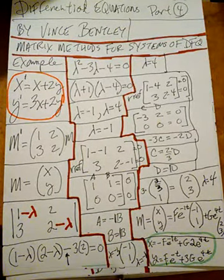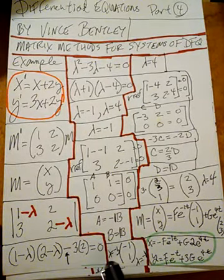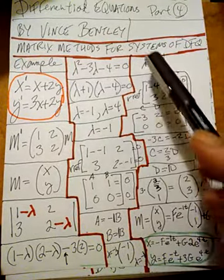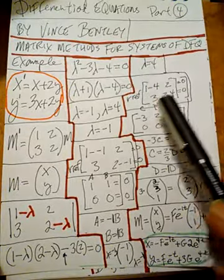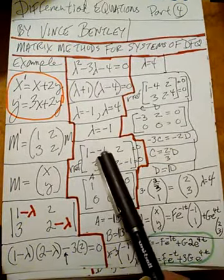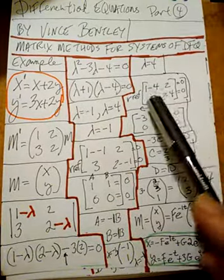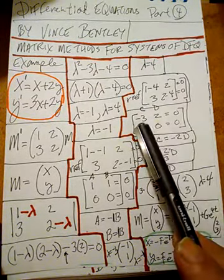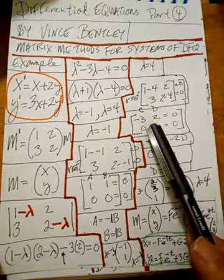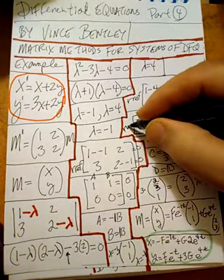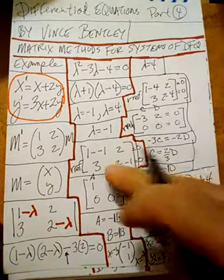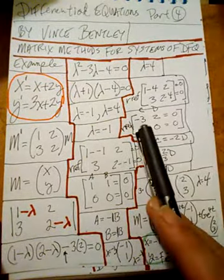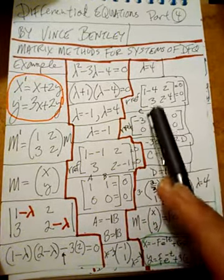Since we got negative one and four, we have to do this all over again for lambda equals four. So here I did one minus four and two minus four, just like we did one minus negative one and two minus negative one. The other two entries we left the same, so this mimics the previous case perfectly. We get this matrix once we simplify. We'll RREF this matrix just as we RREF the previous one. I'll use different constants C and D instead of A and B so people don't get confused.